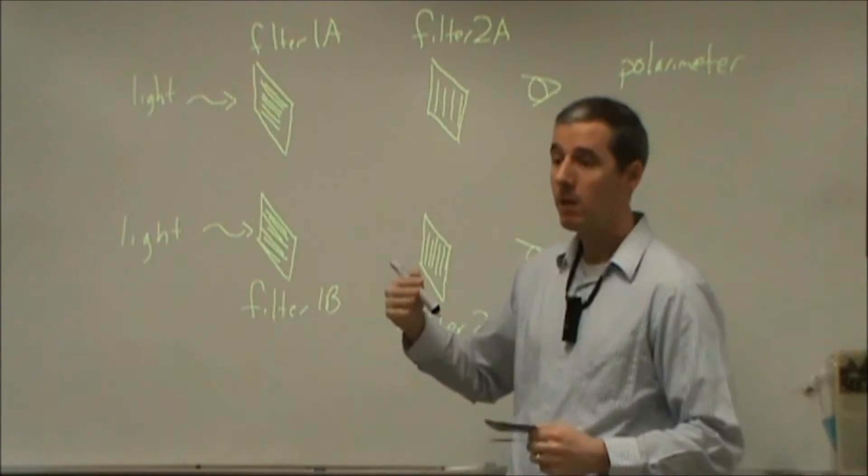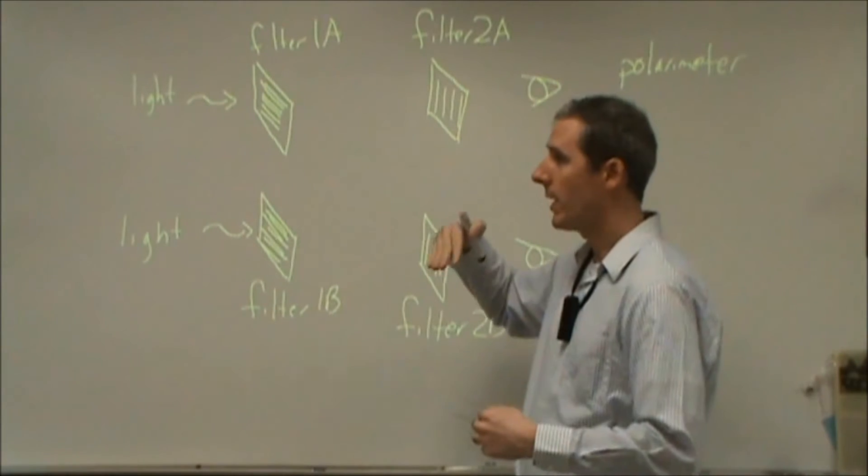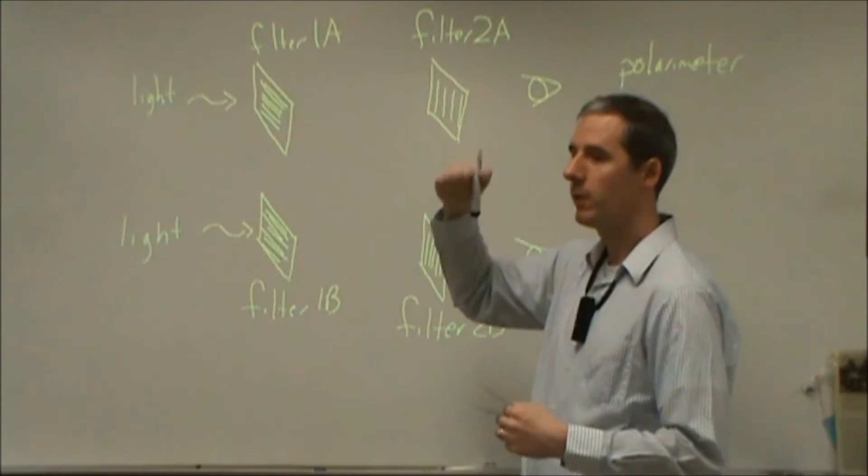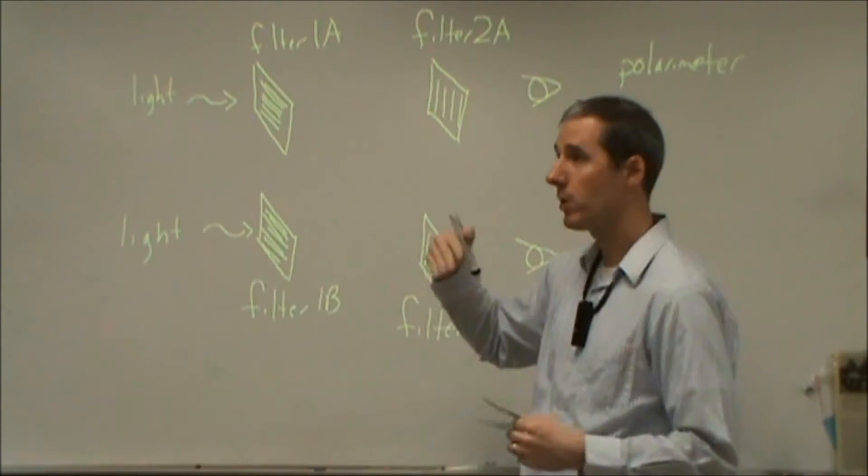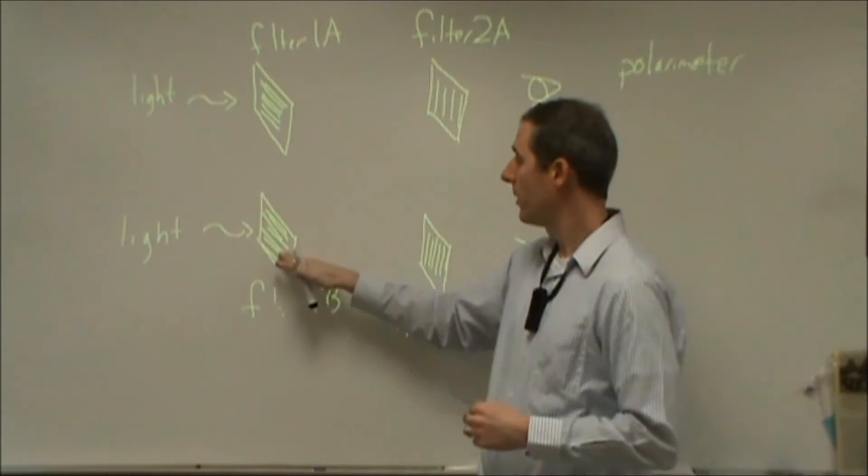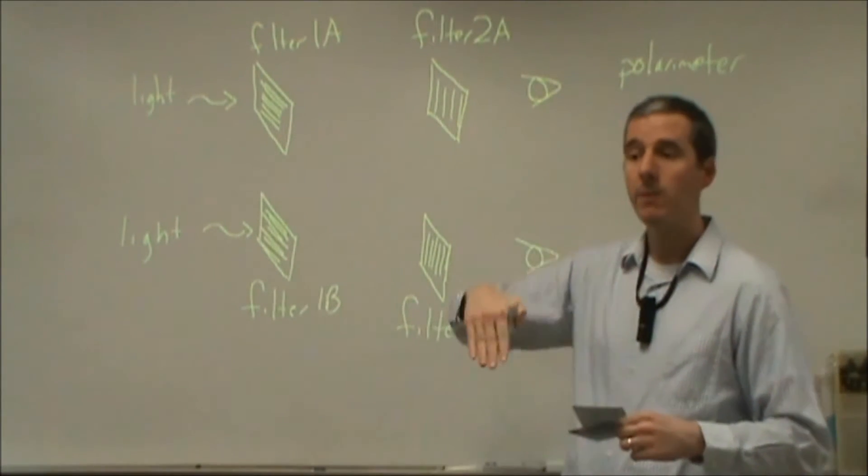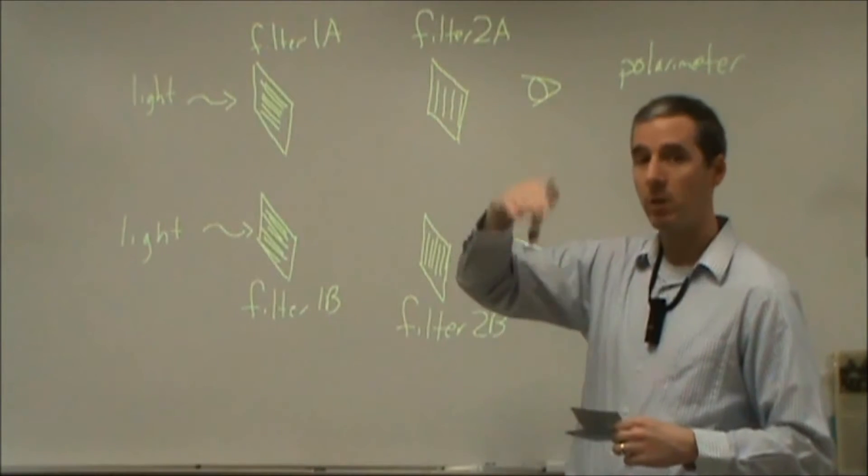Light is a wave that is traveling where it has an electric field oscillation in one direction for each of the light waves that's propagating. And so this filter is set up to block out the light waves where that oscillation is in a certain direction.